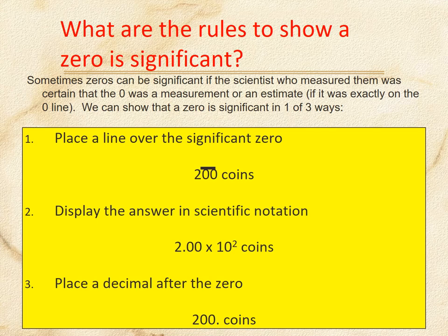How can we make a zero significant? There are three ways. First, place a line over the significant zero or zeros to show it's significant — not my favorite method. Second, write the number in scientific notation: for example, 2.00 × 10² for 200 coins — I like that method. Third, place a decimal after the number, like writing '200.' — that decimal makes the zeros significant. I prefer methods two and three.